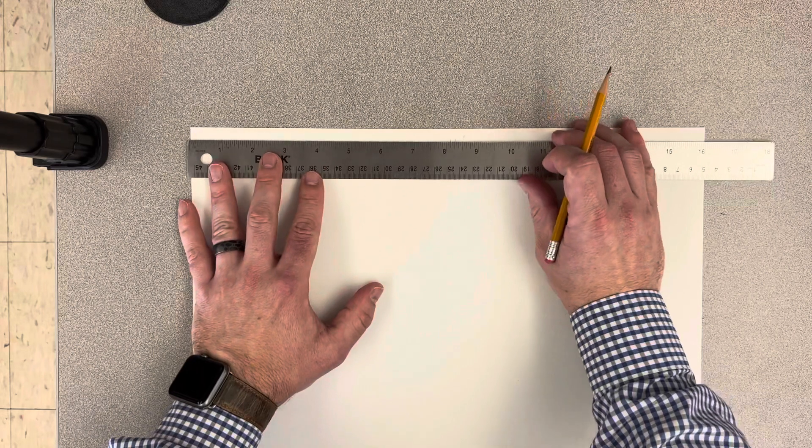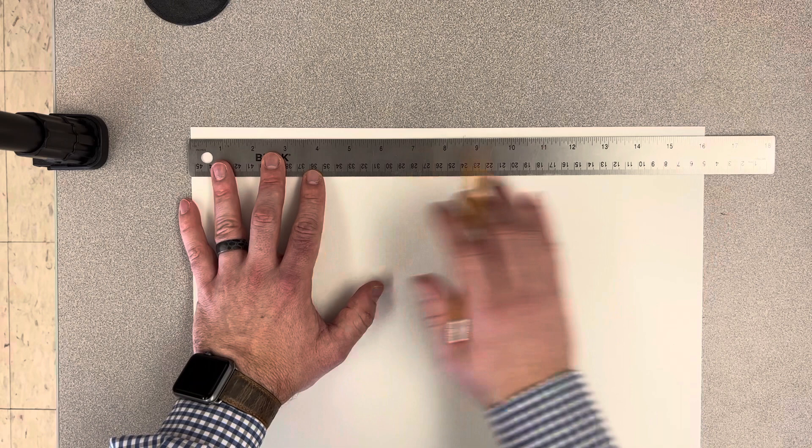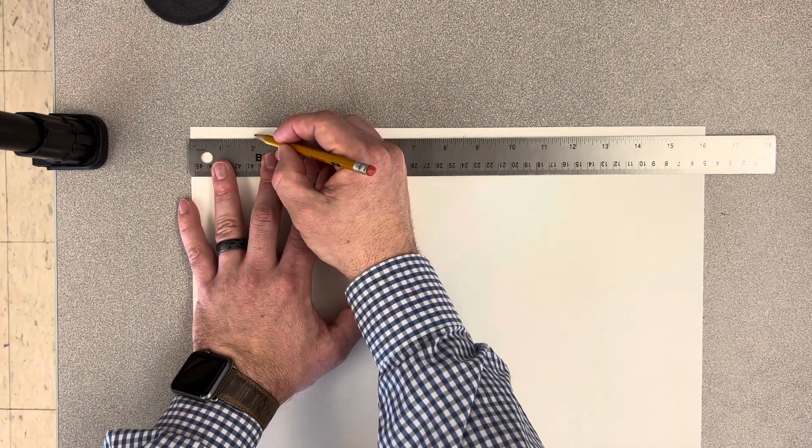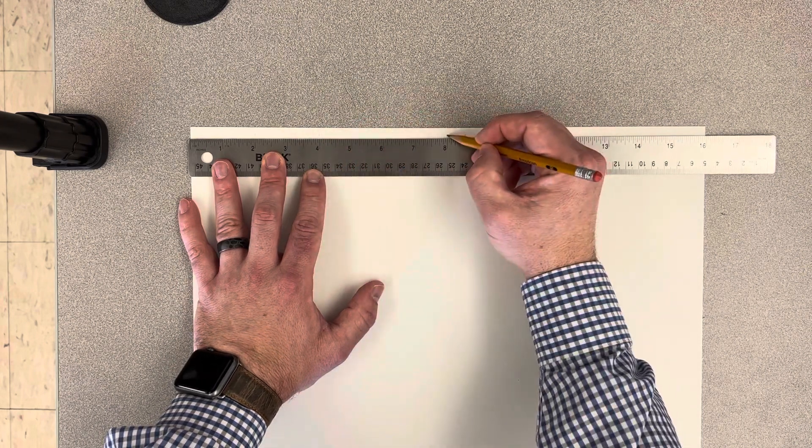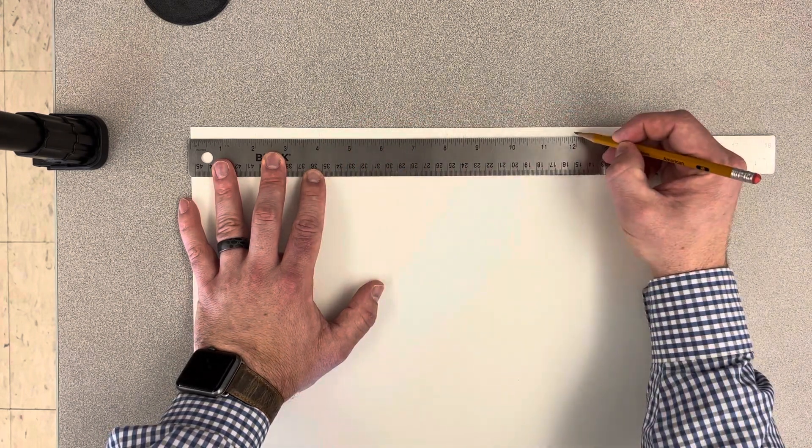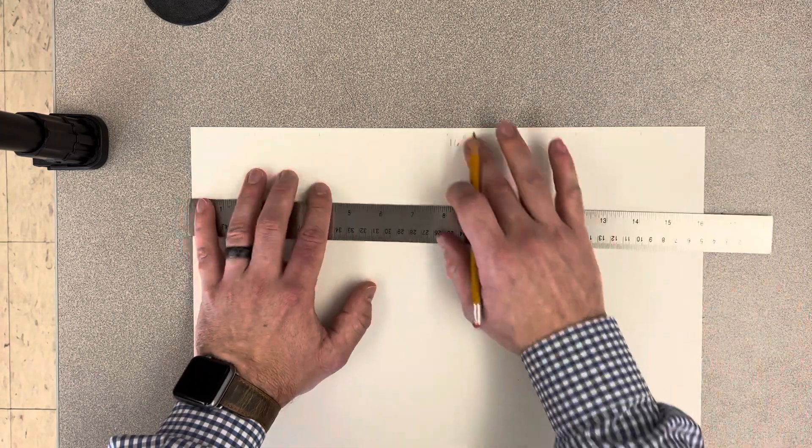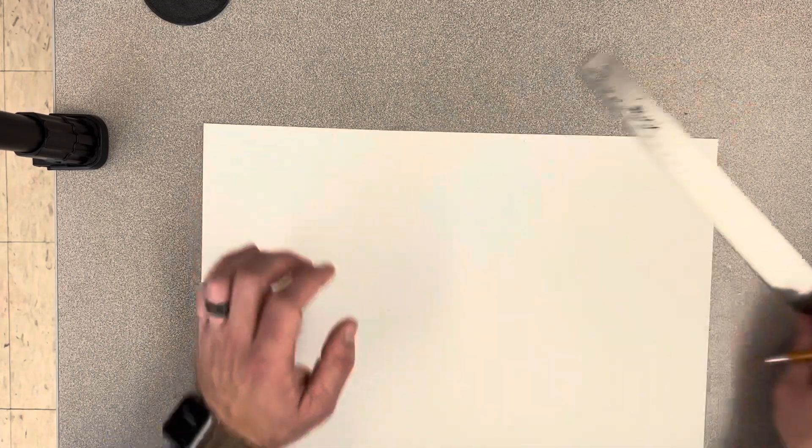I'm going to go to the top of my paper and do the same exact thing. I can leave a little strip like this—doesn't have to be exact. Put my ruler right on the edge of the paper, put a mark at 2. Don't move the ruler: 4, 6, 8, 10, 12, 14.